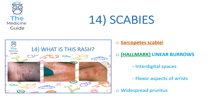Rash 14 is scabies, caused by Sarcoptes scabiei. The hallmark features are linear burrows found in interdigital spaces — the web spaces between fingers — and on the flexor aspects of the wrists. The child will have widespread pruritus, possibly unable to sleep due to constant itching. Whenever there is a description of linear burrows, pick scabies and move on.